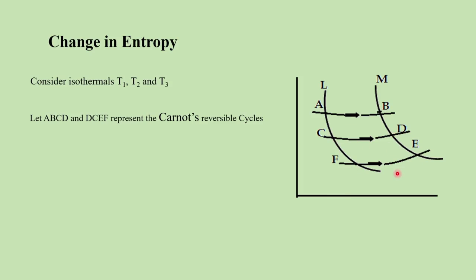These represent the Carnot's reversible cycles. We will consider the first reversible cycle A, B, C, D. During this Carnot's cycle, the amount of heat absorbed is Q1 at temperature T1.